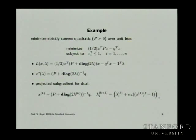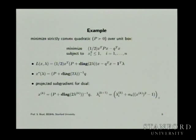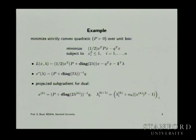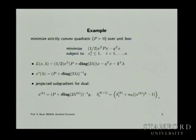Let's look at an example — just quadratic minimization over a unit box, with P strictly positive definite. We could do projected subgradient on the primal: take x, then x minus equals alpha times (Px minus q), and then apply saturation to project onto the unit box. That's the primal subgradient method applied to this.